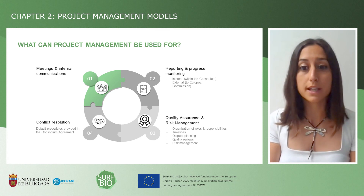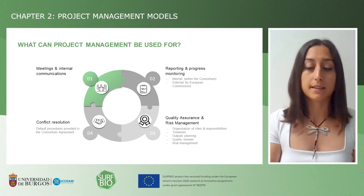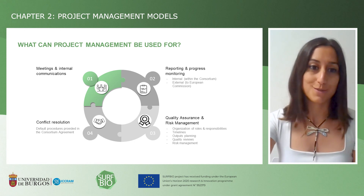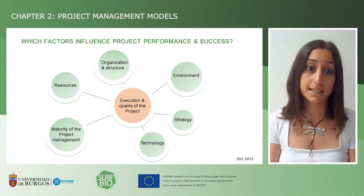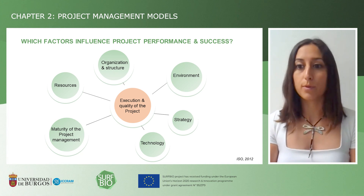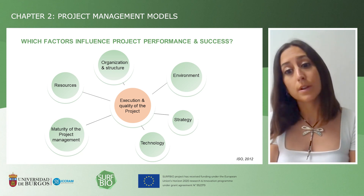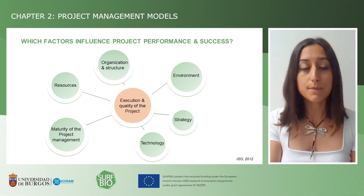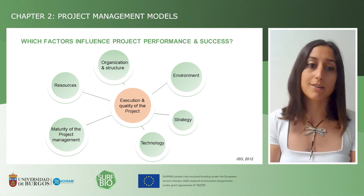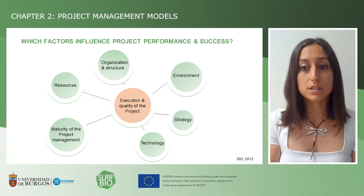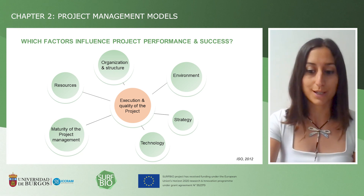By default, there are procedures provided by the consortium agreement that can be applied during project management. There are also factors that influence project performance and success. These are, for example, the environment, the strategy, the technology available, the maturity of the project management, resources that are available, and the organization and structure. These are all factors that will influence the execution and quality of the project.